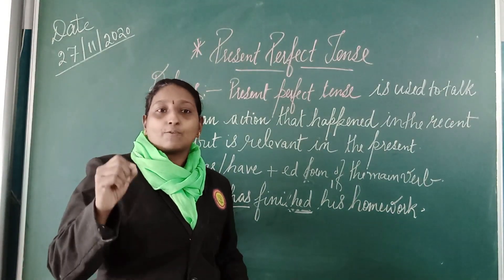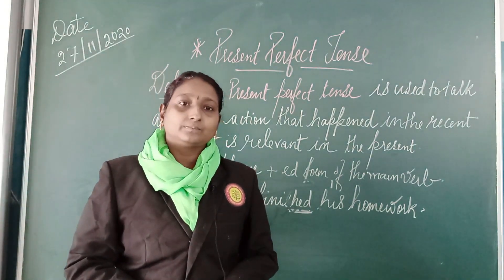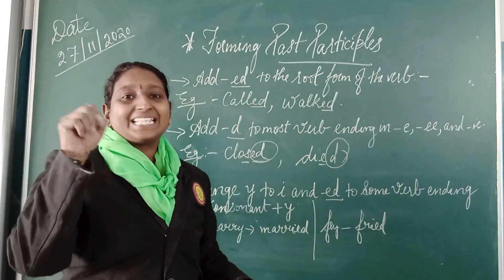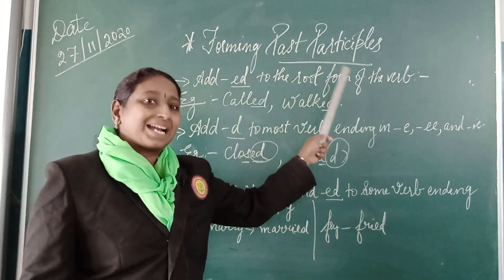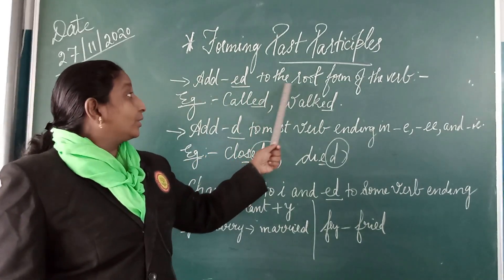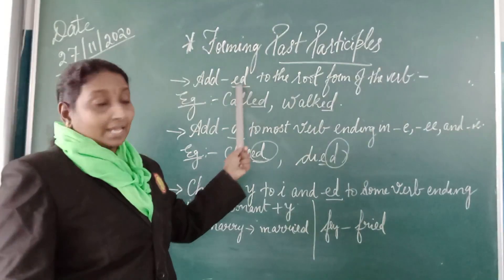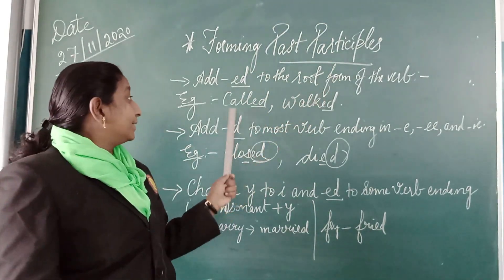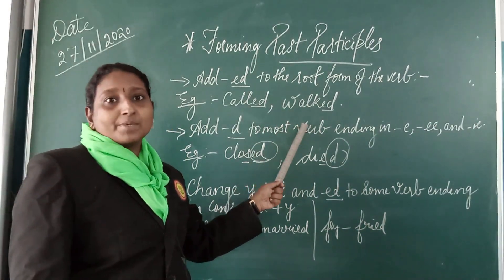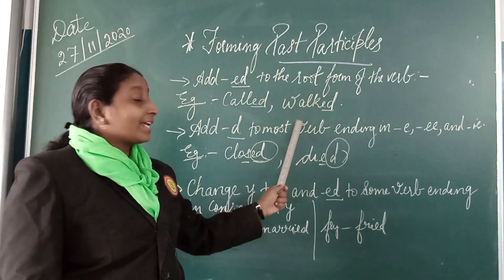Now let's look at forming the past participle. The E-D form means the past participle. The first way: add E-D to the root form of the verb. Wherever the main verb is, add E-D — that shows the past participle. For example: 'call' plus E-D becomes 'called.' If your main verb is 'walk,' when you add E-D it becomes 'walked' — the past participle form.